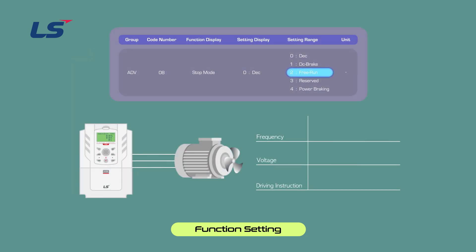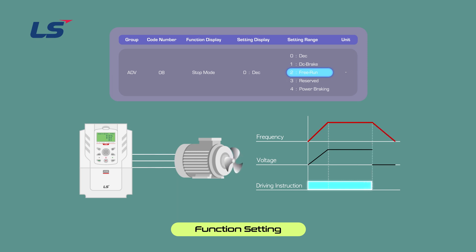Free Run stop method is a function that blocks the AC drive output when the operation command is turned off. Even when the AC drive output is blocked, if the load inertia of the motor is large and operating at high speed, the motor may rotate due to inertia for a long time. The Free Run stop method has the same effect as equipment that operates on direct line. When Free Run stop is used, regenerative energy from the motor is blocked from entering the AC drive, and an overvoltage trip does not occur.